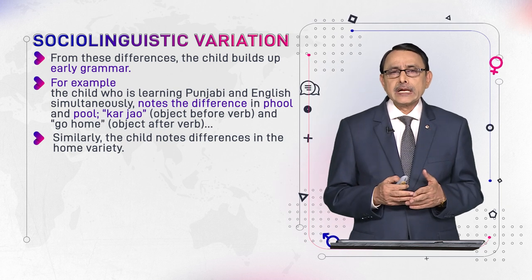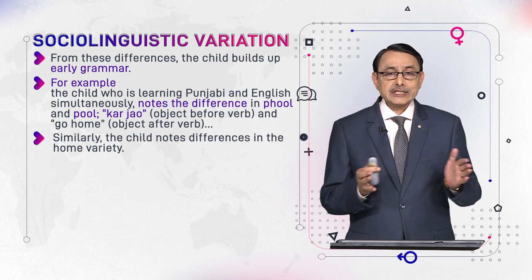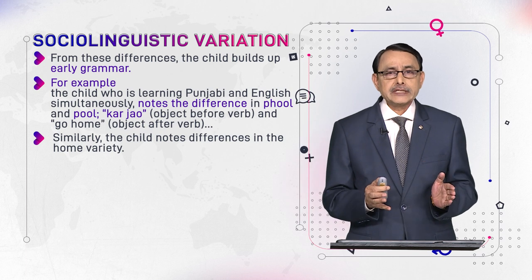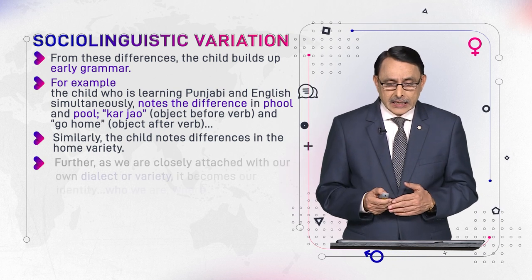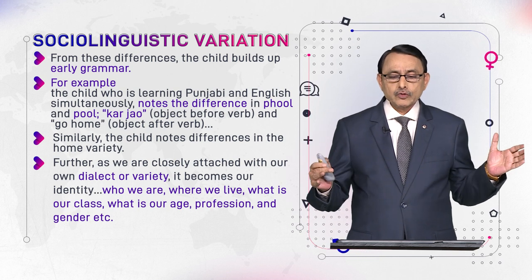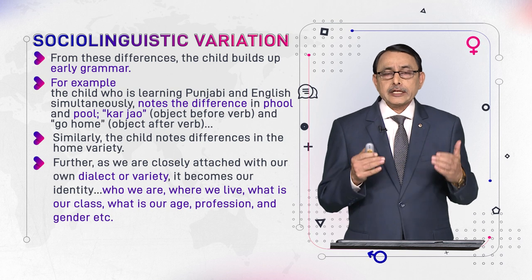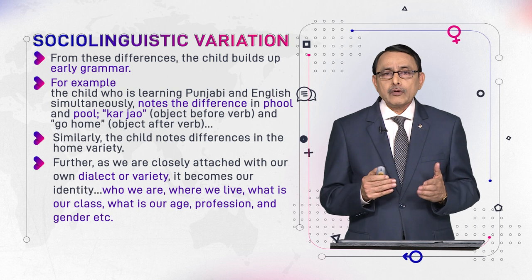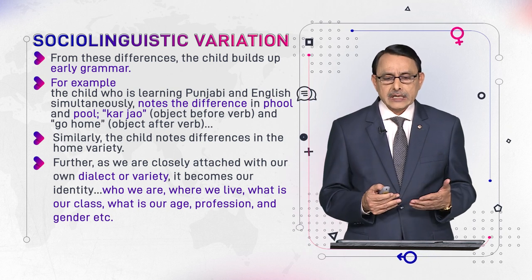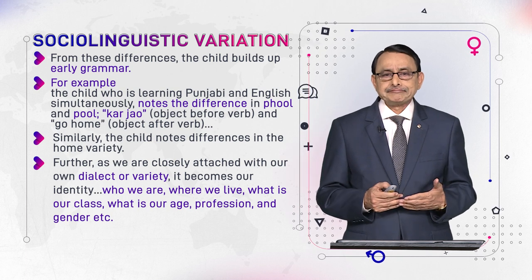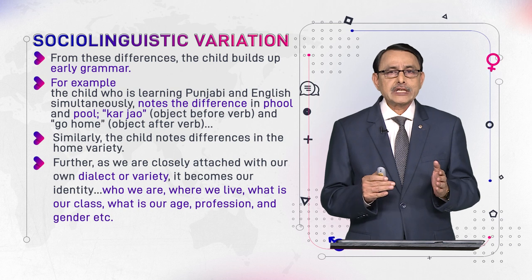This is the difference in the structure of phrases and sounds which the child observes. These differences when learning two different languages or varieties actually make up the respective grammars of the languages in the child's mind. Furthermore, as we are closely attached with our own dialect or variety, it becomes our identity — it tells who we are, where we live, and what is our class, whether middle, working, or elite.